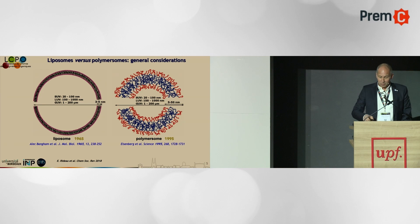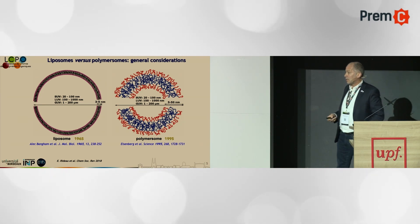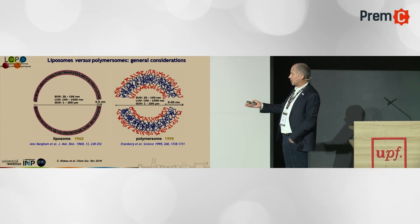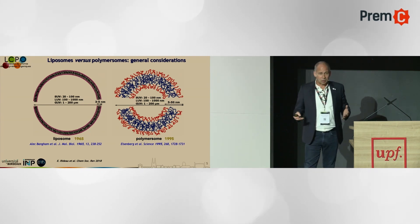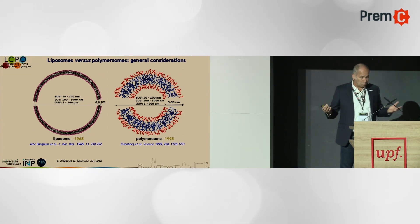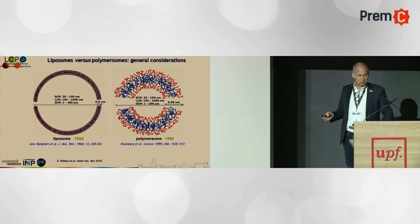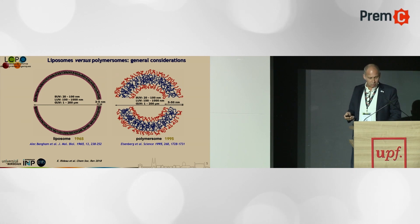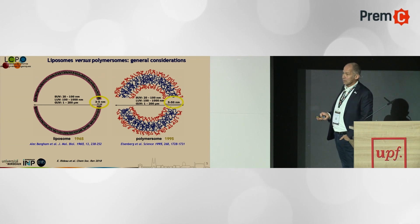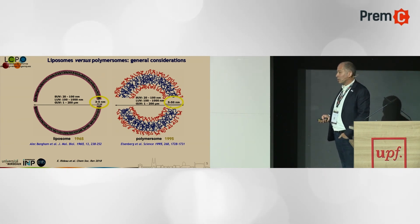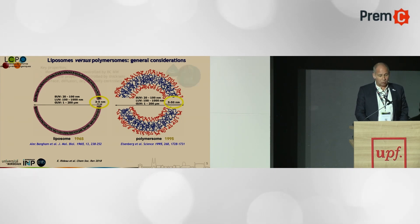Later came the work on polymersomes, which are basically the polymeric analogues of liposomes. These systems are very similar in terms of structure — it's an amphiphilic diblock copolymer, with water inside and out. The main difference is membrane thickness: the membrane is much thicker for polymersomes compared to liposomes, and this tunes and changes all the properties.